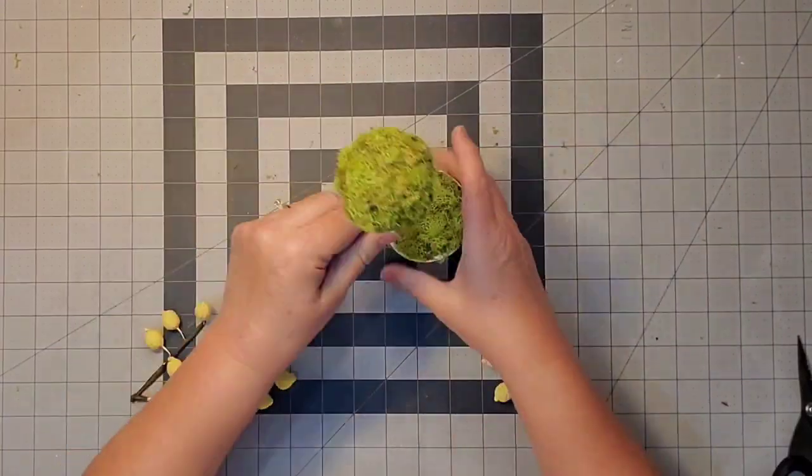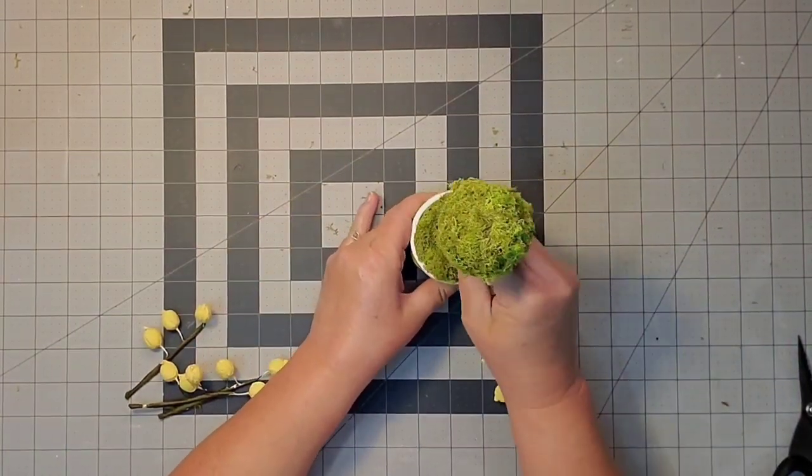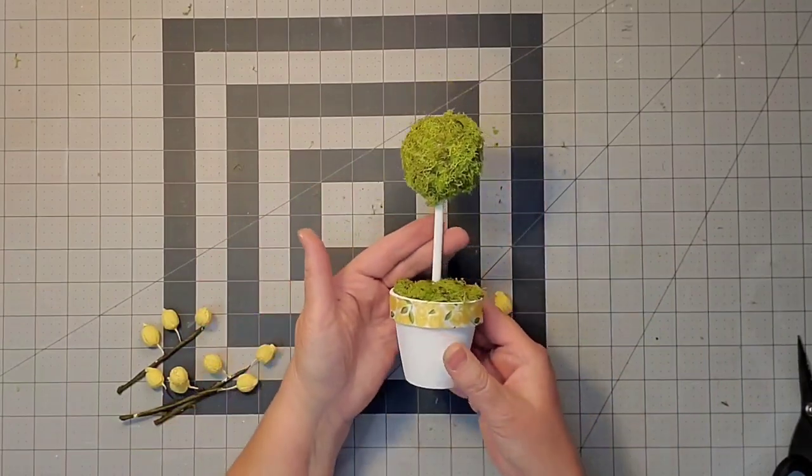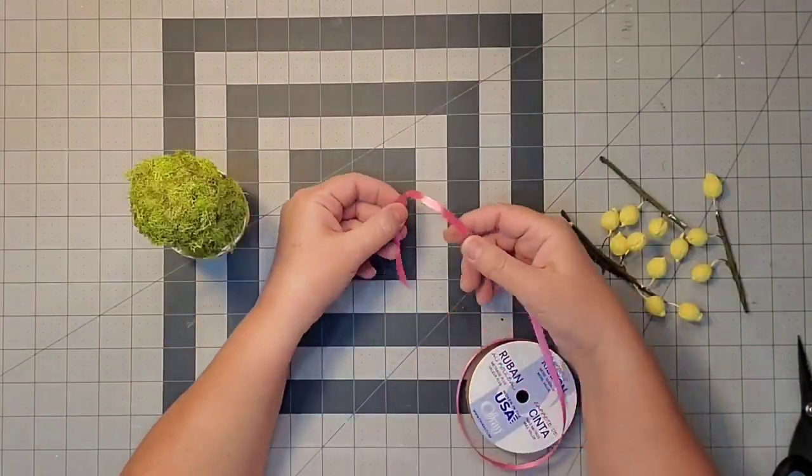Next I'll bring over my pot and press it down until I get it to the height I want, pushing it right into that styrofoam.